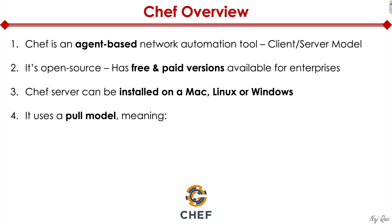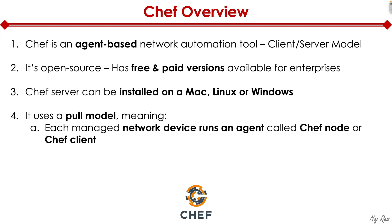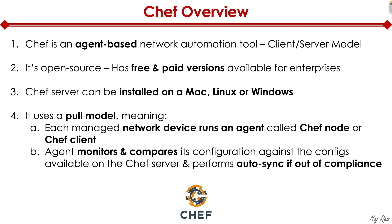Chef uses a pull model, which is the opposite of Ansible. Each managed network device runs an agent called Chef node or Chef client, so the managed device is basically a client — router, switch, firewall, you name it. An agent monitors and compares its configuration against the configs available on the Chef server and automatically synchronizes the configuration if it finds itself to be out of compliance.